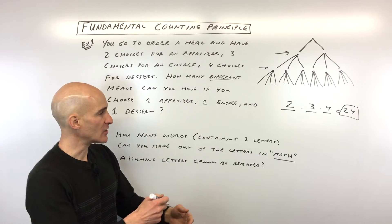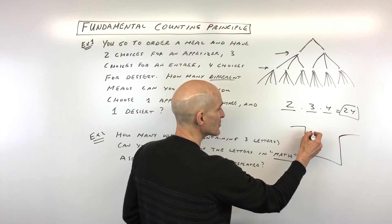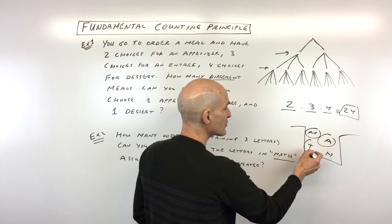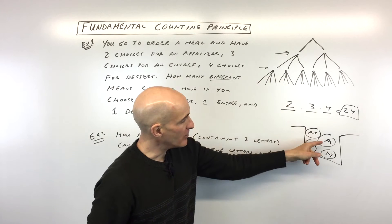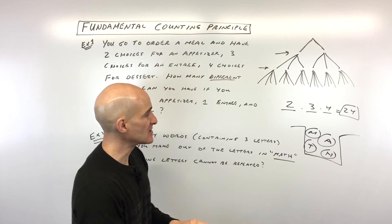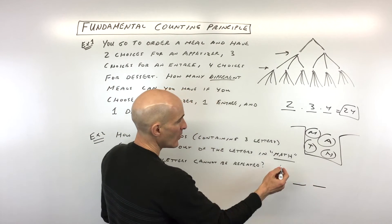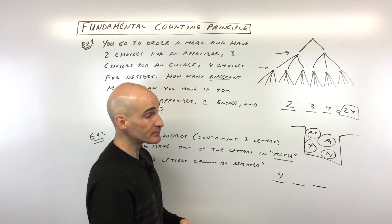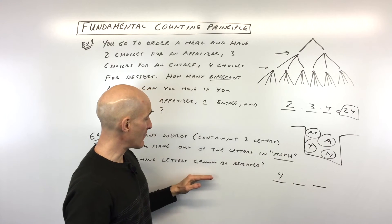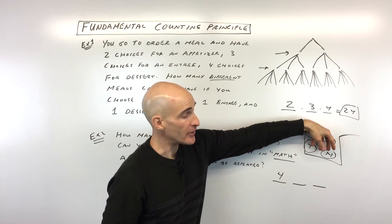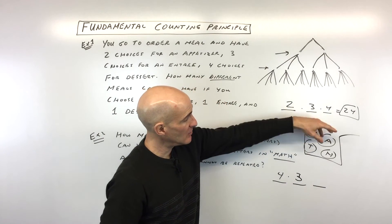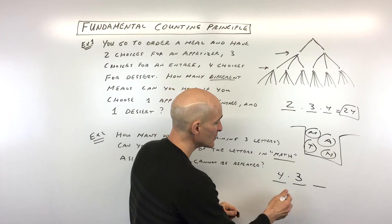One way to look at this is to imagine you had these letters — M, A, T, and H — in a hat. You're going to pick letters out of the hat. How many ways can you pick that first letter? You've got four choices. Once you pick that letter, you can't use it again because letters can't be repeated. So how many choices are there for the next letter? Three choices. And when you go to pick that third letter, how many choices are left? There are only two left.